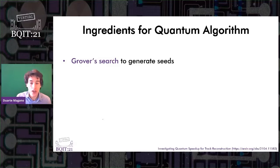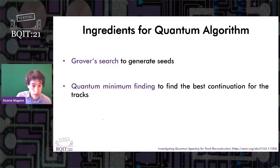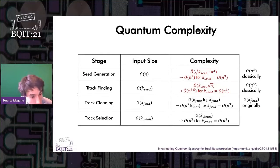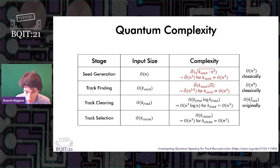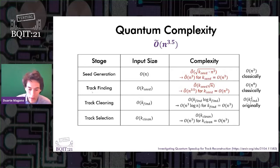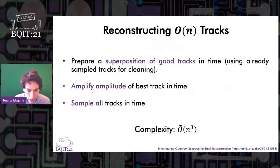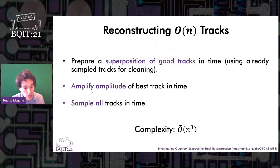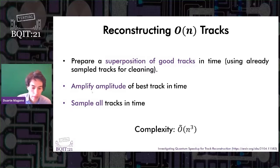We also studied quantum algorithms, and I'll give you the key ideas. We apply Grover Search to generate seeds, and use quantum minimum finding in the track finding stage to find the best continuation of the tracks. Using these quantum routines, the complexity of both the seed generation and track finding stages is lower. We conclude that with these modifications, the complexity can be reduced to O(n^3.5), omitting polylogarithmic factors. We also show that in the special case where we want to reconstruct the n best tracks, we can lower this further to O(n³), again omitting polylogarithmic factors.